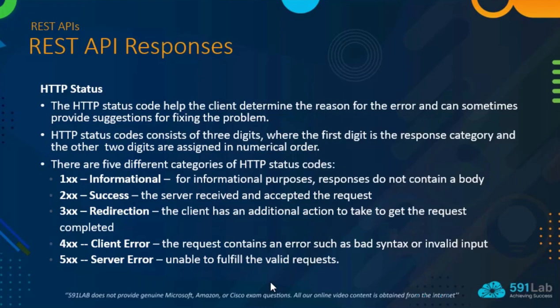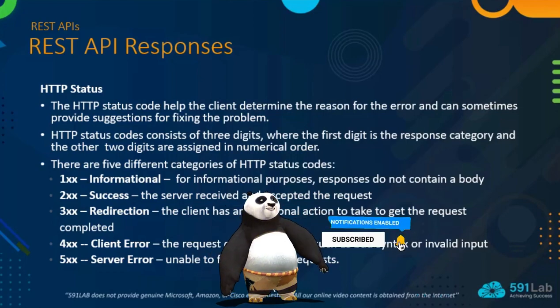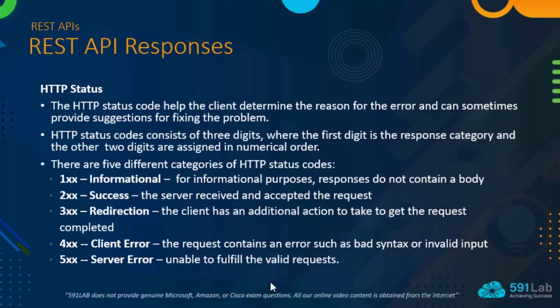There are five different categories of HTTP status codes. Category 1 is informational — responses do not contain a body. Category 2 signifies success — the server received and accepted the request. Category 3 signifies redirection — the client has an additional action to take to complete the request. Category 4 has to do with client errors — the request contains an error such as bad syntax or invalid input. Category 5 has to do with server errors — the server is unable to fulfill the valid request sent by the client.